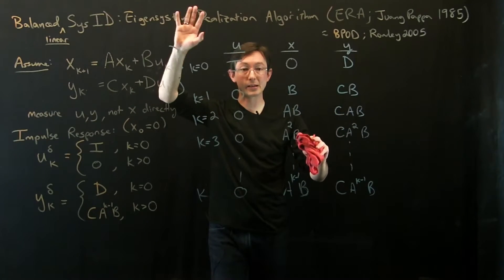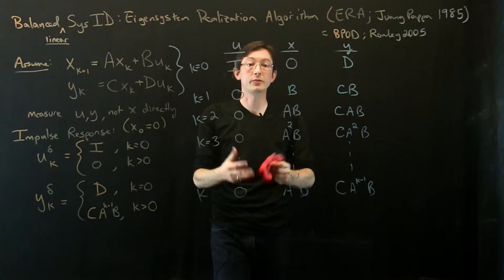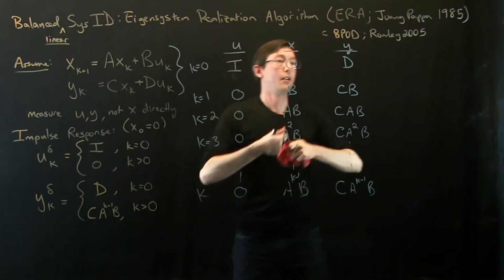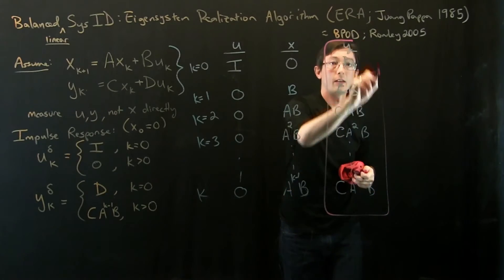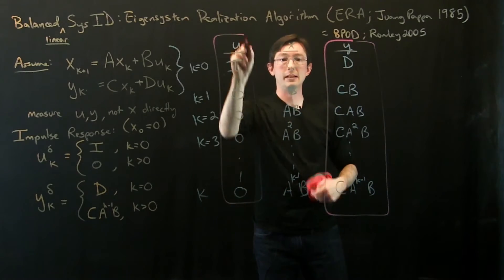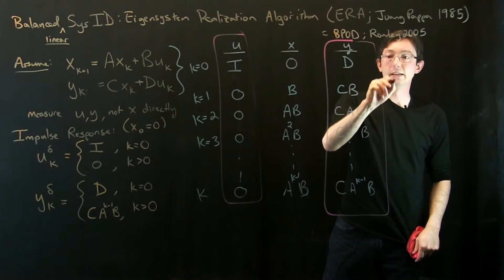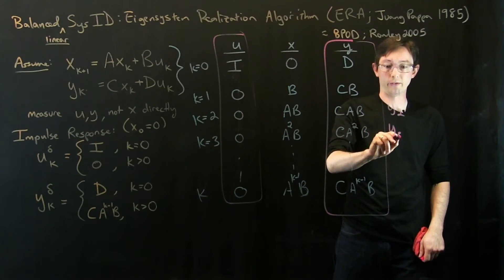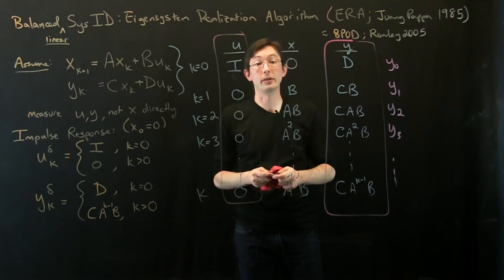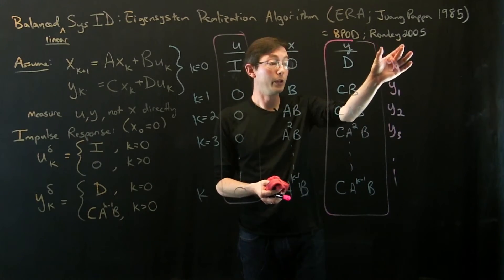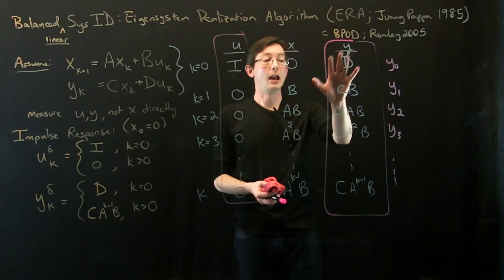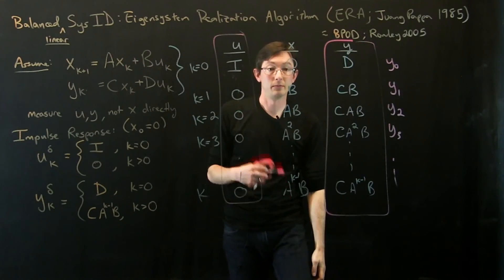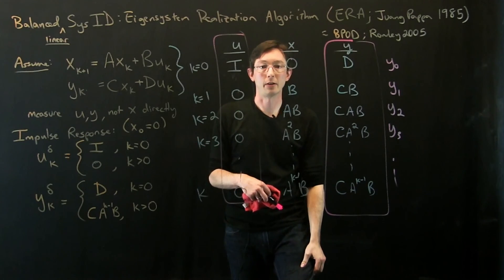But for now, for eigensystem realization algorithm, we assume we have an impulse response. We have this data. These are measurements. What we have is this data, and this was the impulse. So this is y0, y1, y2, y3. This is the data that we have for the eigensystem realization algorithm. We literally just have this data, and then from this data, we're going to build a reduced order model, a system identification model.